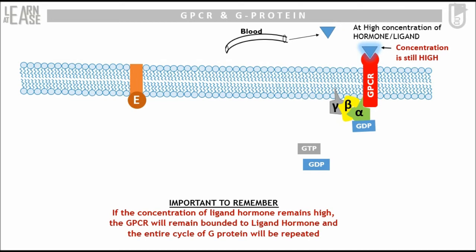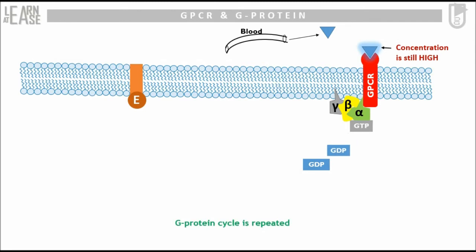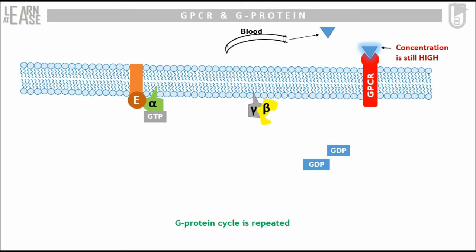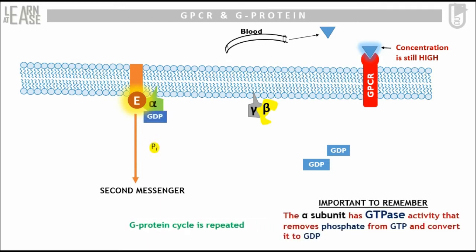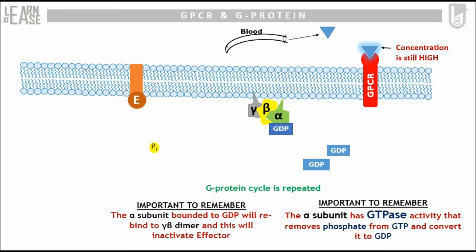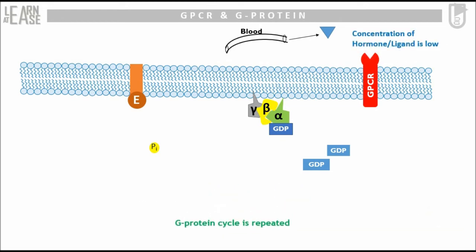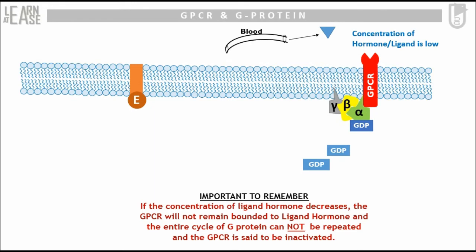Again, the alpha subunit will replace its GDP with GTP, splitting from the gamma-beta dimer and GPCR. The alpha subunit will bind to the effector, activating it to produce a second messenger. Slowly, the alpha subunit with its GTPase activity will remove a phosphate from GTP and convert it to GDP, causing it to rebind to the gamma-beta dimer. If the concentration of the hormone or ligand is reduced such that GPCR can no longer bind to it, the trimeric G-protein will bind to GPCR and attain its native inactive form, and the cycle will stop.